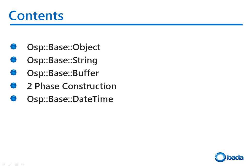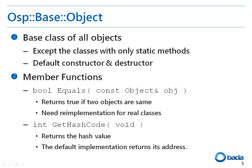During this video lecture, I will explain Bada's base namespace. The base class of the base namespace is the object class. The object class is the base class of all Bada classes except those with only static methods. The object class provides the equal and the getHashCode functions. The equal function returns true if two objects are the same. The getHashCode function returns the address of the object in the current implementation.